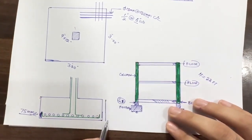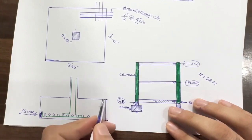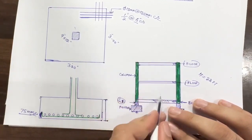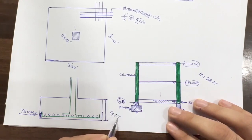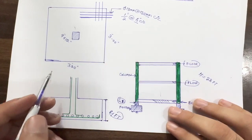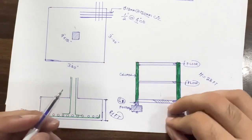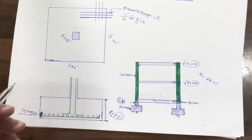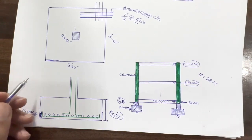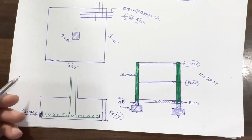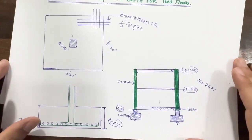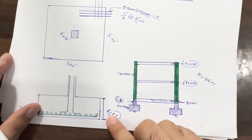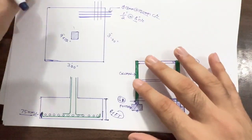The depth of the footing for a normal residential building up to two storeys — from ground to first floor — should not be less than four feet. As per ACI code it should not be less than one meter, but for a two-storey building specifically it should not be less than four feet. This is the normal depth of foundation for a normal two-storey residential building.